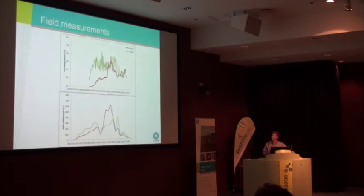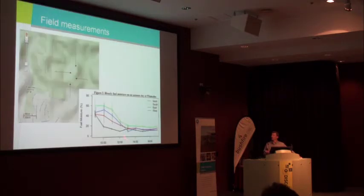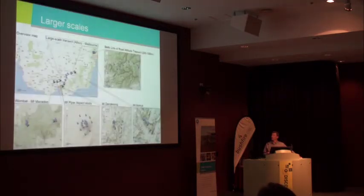Looking in a bit more detail at fuel temperatures and radiation from the north and south slopes: the fuel temperatures on the southern one are depressed until the middle of the day when there's a break in the canopy. The sun gets over the top of the hill, the fuel heats up, and that's where we get that drying.